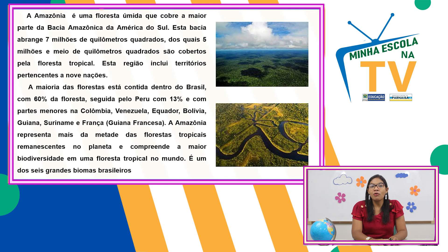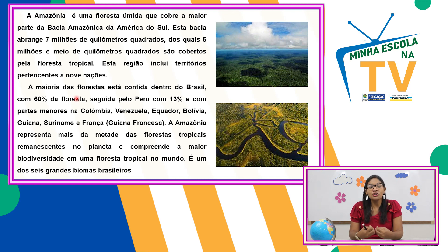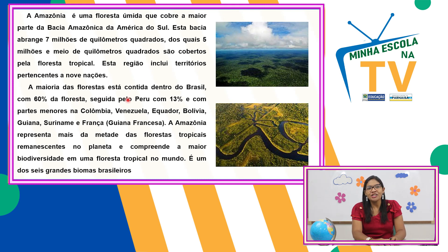A Amazônia é uma floresta úmida que cobre a maior parte da bacia amazônica da América do Sul. Essa bacia abrange 7 milhões de quilômetros quadrados, dos quais 5 milhões e meio de quilômetros quadrados são cobertos pela floresta tropical. Essa região inclui territórios pertencentes a 9 nações. A Amazônia não é toda do Brasil — grande parte está sim no nosso país, mas outros países também abrigam a floresta. A maioria está no Brasil, com 60% da floresta.